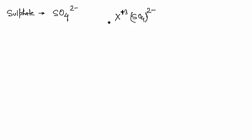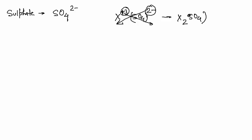Cross multiply the magnitudes — don't worry about the sign. X has charge 3 and SO₄ has charge 2, so cross multiplying gives X₂(SO₄)₃. The name would be the element name followed by sulfate.